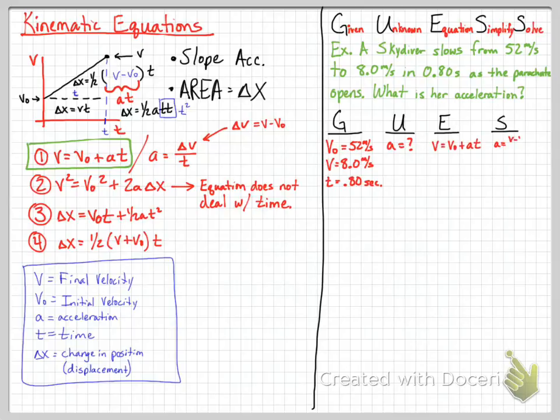We simplify that by solving for A. When we solve for A, we get A equals the change in velocity over time. I went ahead and wrote it where V minus V0. And then we solve it, write it over here, where final velocity is 8, initial is 52, and then the change in time is 0.8 seconds. So what we end up with is negative 55 meters per second squared, or 55 meters per second squared up.